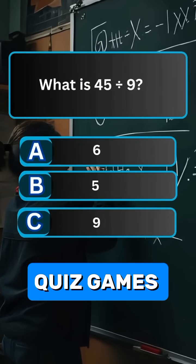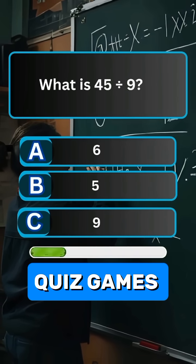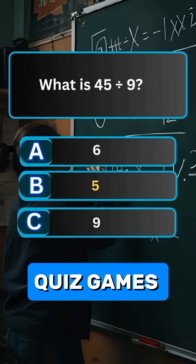Question 1. What is 45 divided by 9? Answer B. 5.